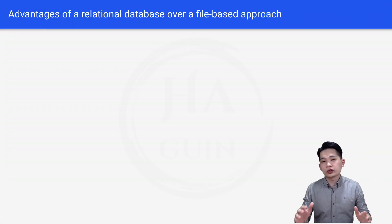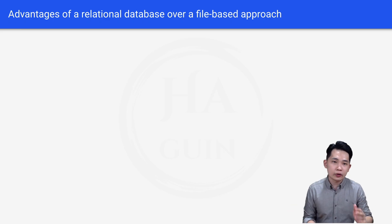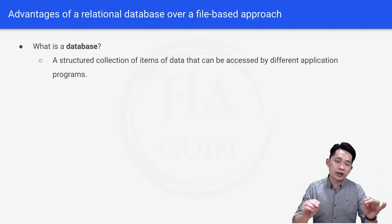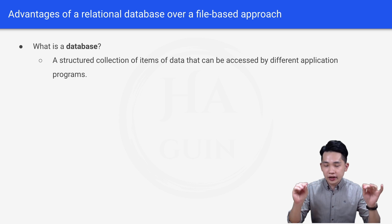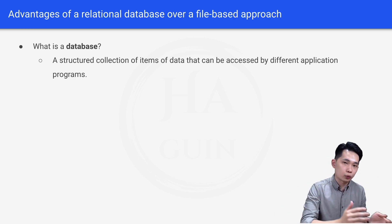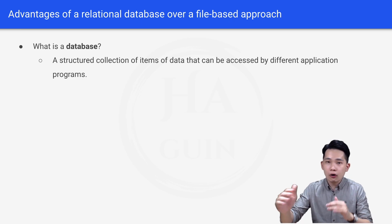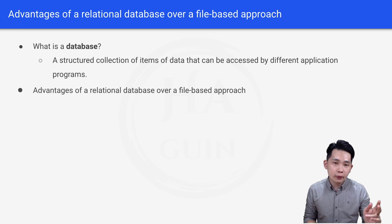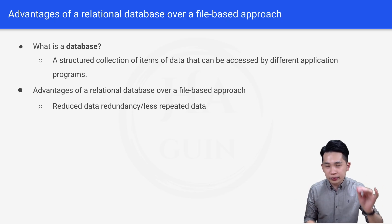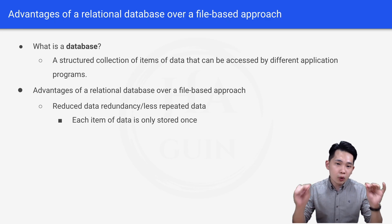So what are the advantages of a relational database over a file-based approach? A database is a structured collection of items of data that can be accessed by different application programs. Instead of creating two files for two different programs, we create one single copy for all the programs. The first advantage is reduced data redundancy — less repeated data because each item of data is only stored once.